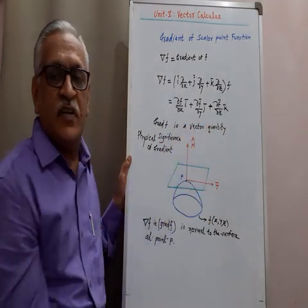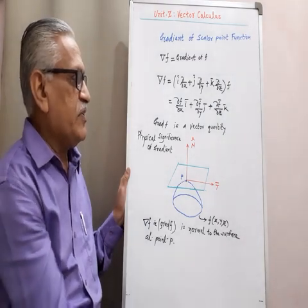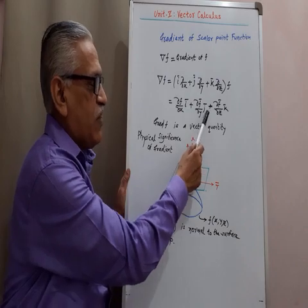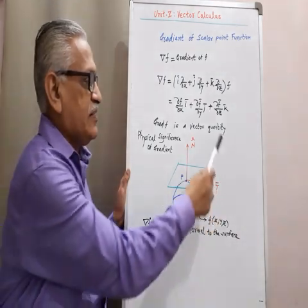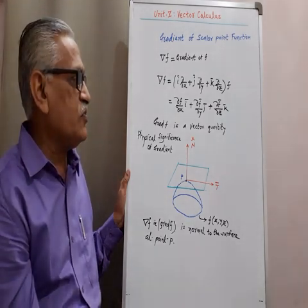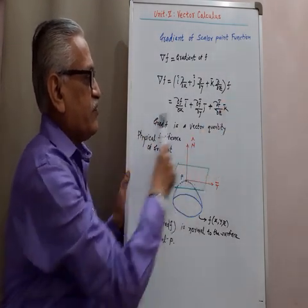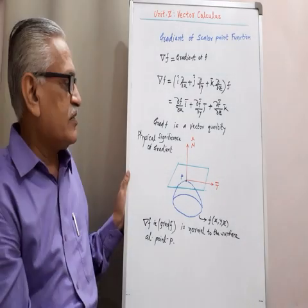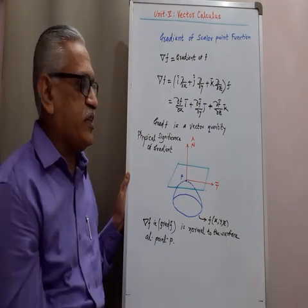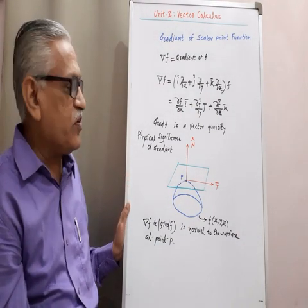We operate this del operator on the scalar point function f to get: the partial derivative of f with respect to x into i, plus the partial derivative of f with respect to y into j, plus the partial derivative of f with respect to z into k. This is the definition of grad f, and as you can observe, it is a vector quantity — therefore grad f is always a vector quantity.